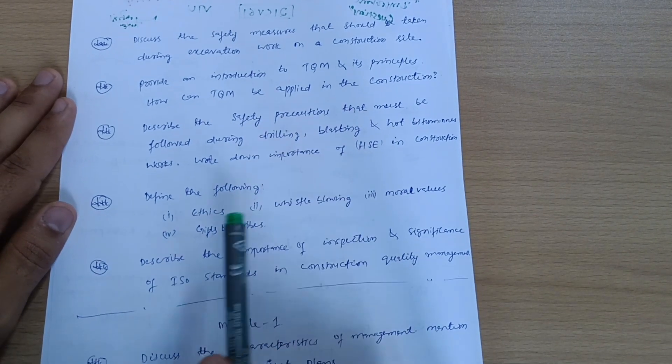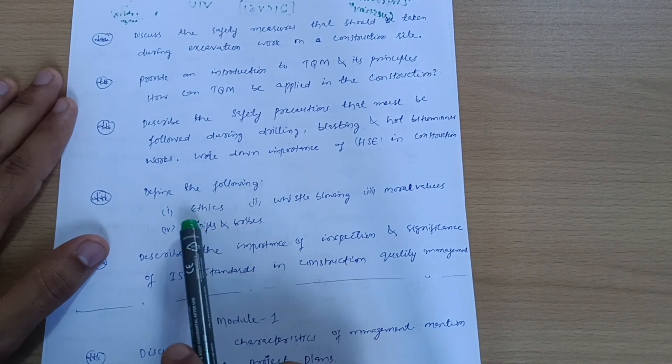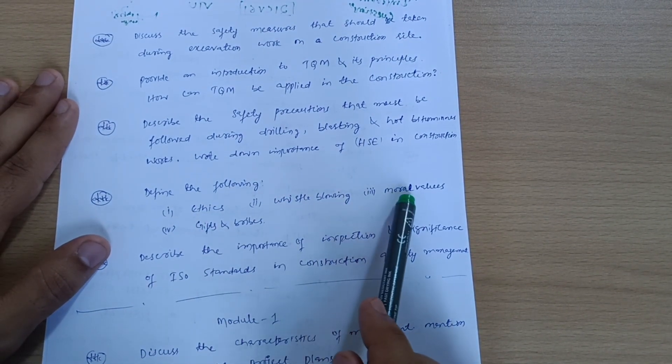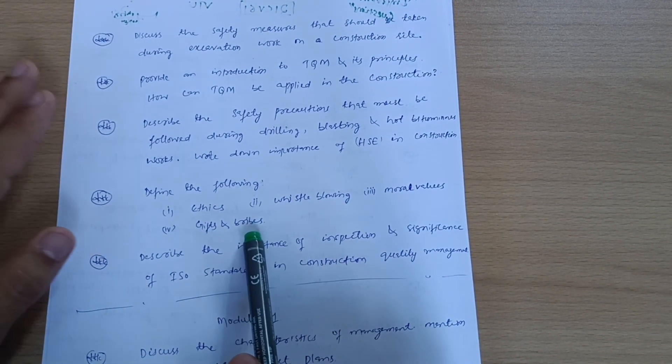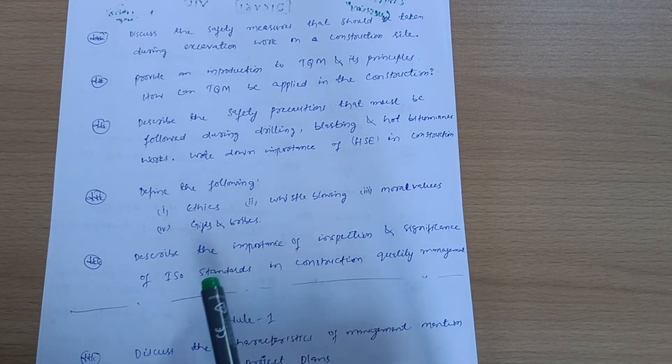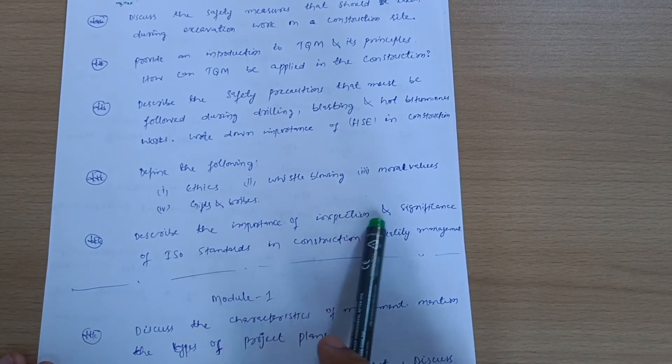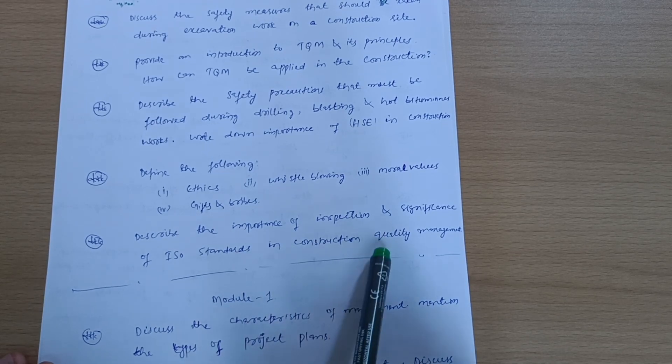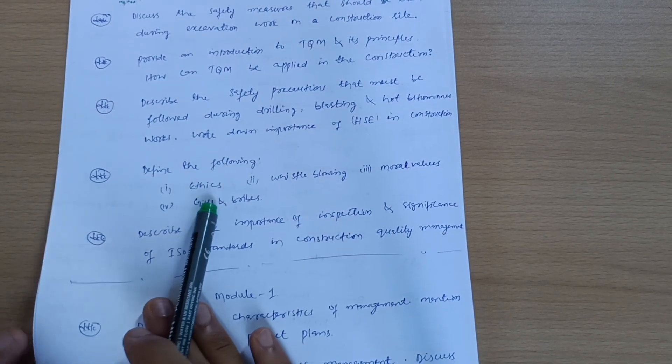Next, define the following: ethics, whistleblowing, moral values, gifts, and bribery. You have to write down the short notes over here. Next, describe the importance of inspection and significance of ISO standards in construction quality management. This is all about Module 3.